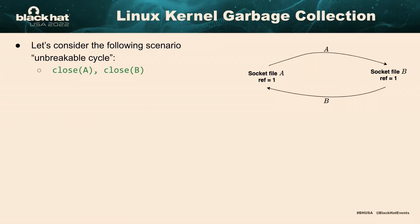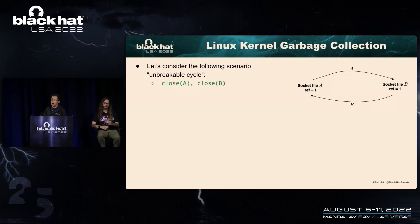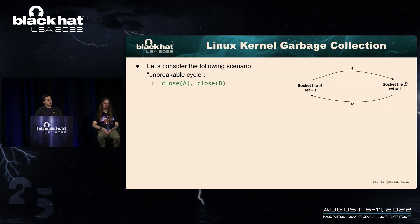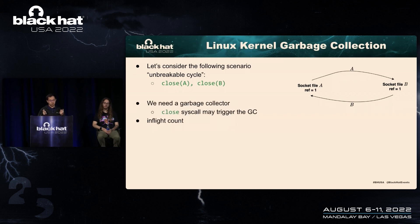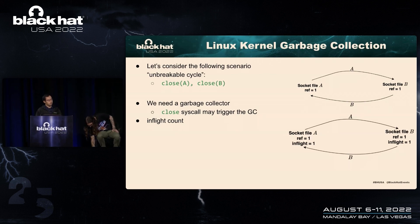Consider the following scenario: file descriptor A sends itself to B, and B sends itself back to A. Then user space closes A and B. There's no way for the kernel to destroy file A and B because they still have a reference count, but there's no way for user space to call close again because the file descriptors are already removed from the kernel descriptor table. That's why we need a garbage collector in the Linux kernel. Every time you call close, it may trigger the garbage collection system, which identifies potential garbage using an in-flight count.